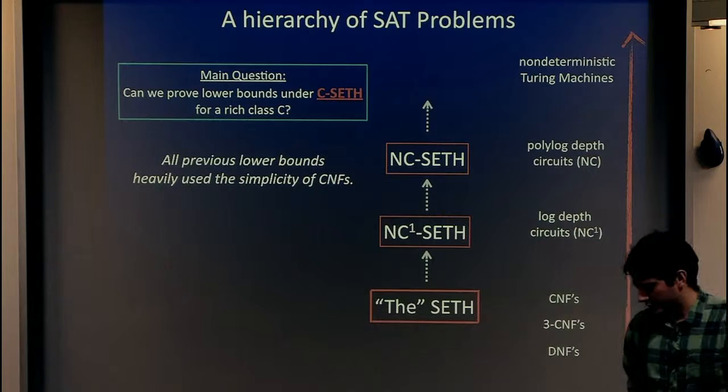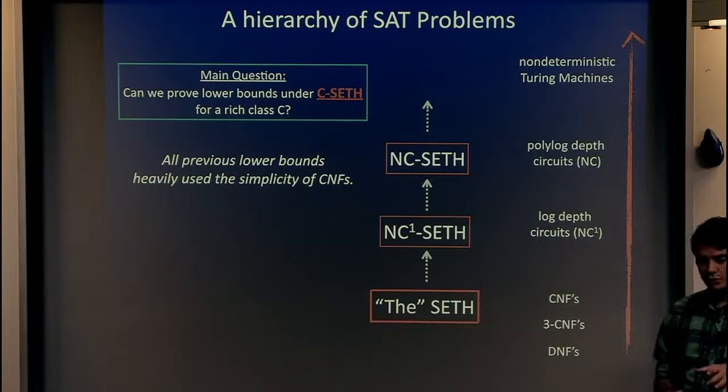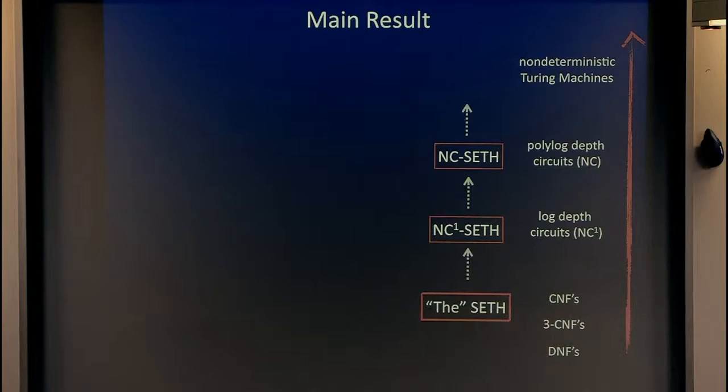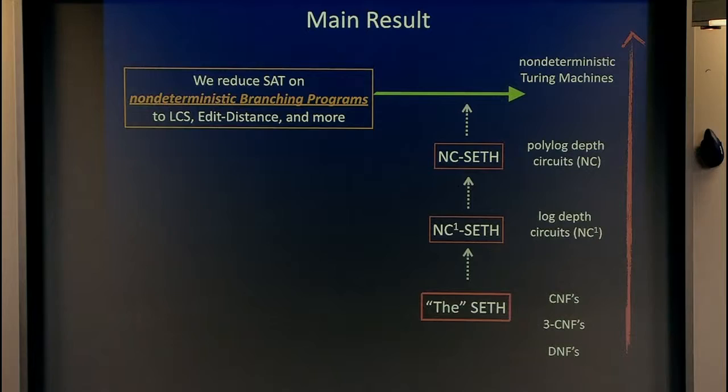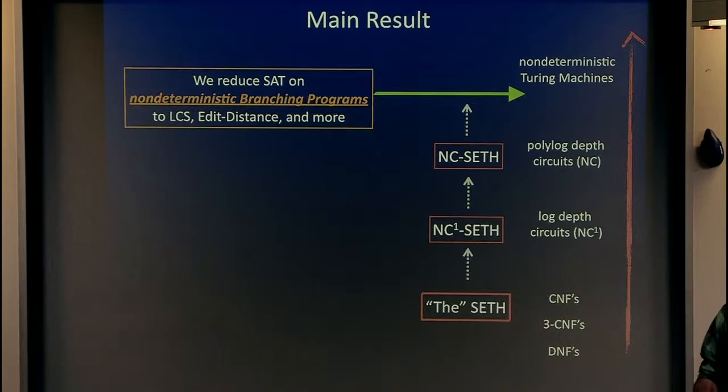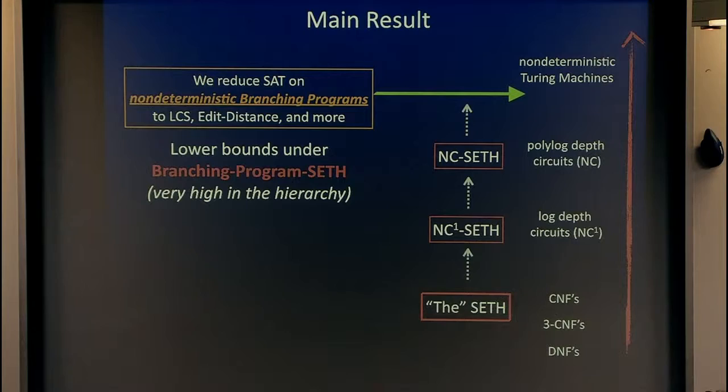This wasn't obvious at all, because all these strong ETH lower bounds really abuse the simplicity of CNFs. But here is our main result: we go very high up in the hierarchy. We show that you can reduce SAT on very complex things, like non-deterministic branching programs, to very fundamental problems like LCS, edit distance, and some others. So now we can base lower bounds under the much more plausible branching program ETH.